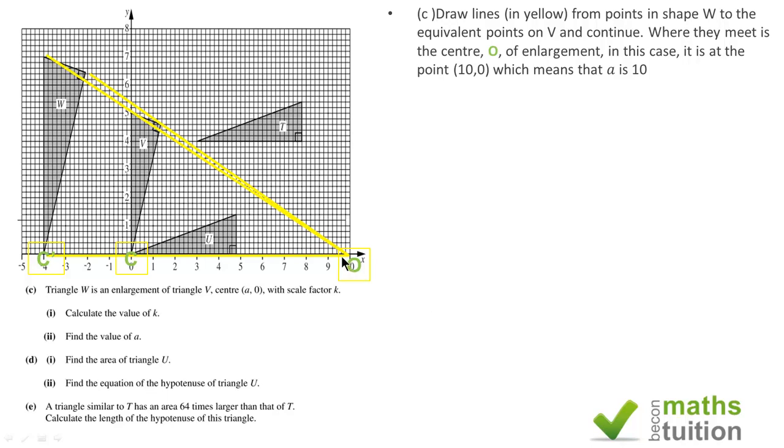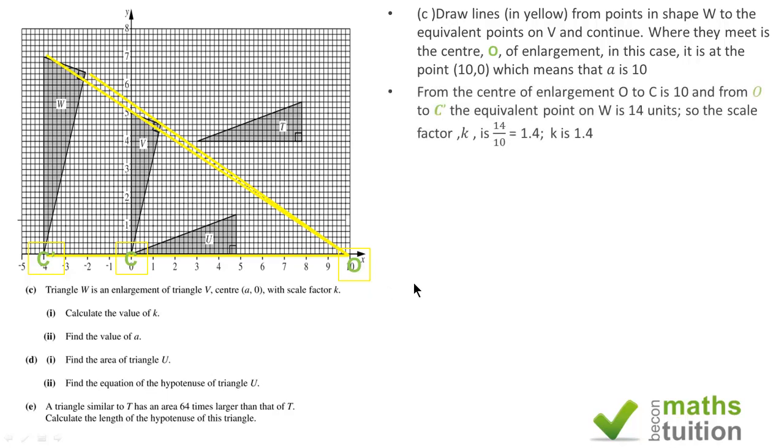To calculate the scale factor K, if you measure the point from the center of enlargement to C, which is the point on triangle V, and from the center of enlargement to C, which is the equivalent point on triangle W, you find that O to C prime is 14 units, and O to C is 10 units. So, if you divide 14 by 10, you get 1.4 as the scale factor, so K is 1.4.